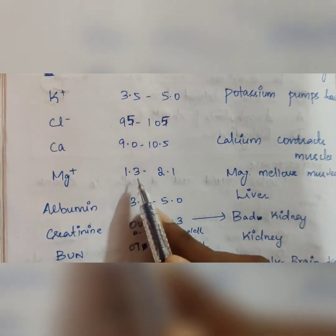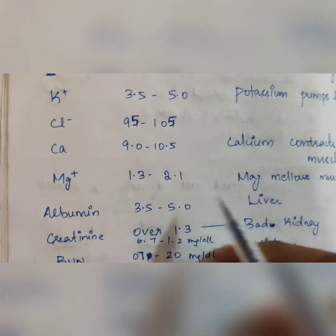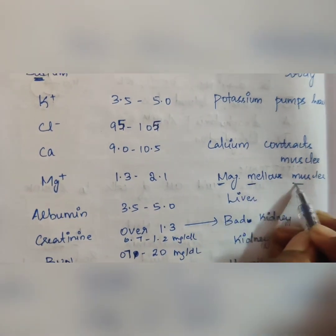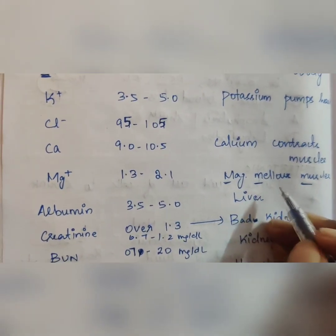That's why calcium channel blockers are used as anti-hypertensive. Next, magnesium. Normal range of 1.3 to 2.1. Magnesium mellows muscles. M and M, mellows and relaxes muscles.